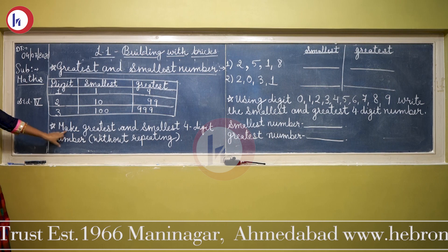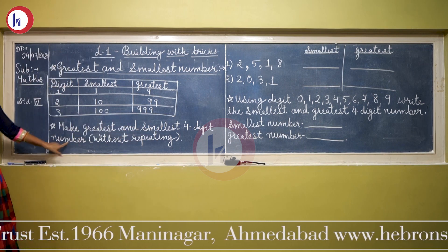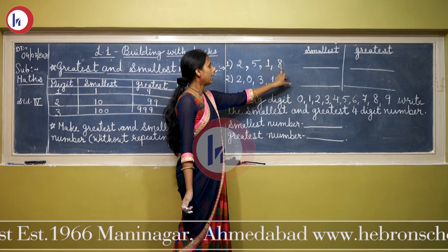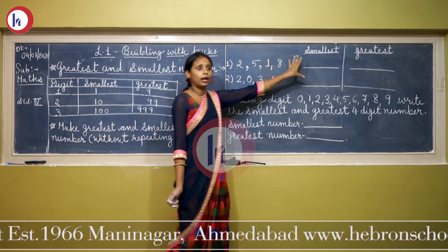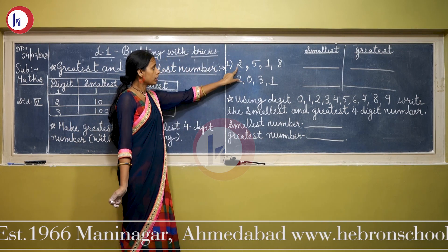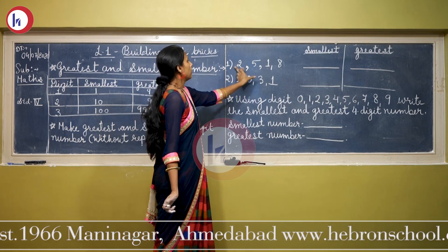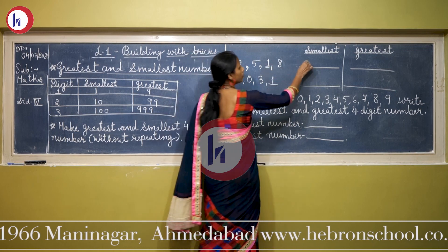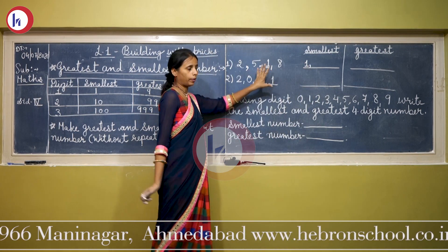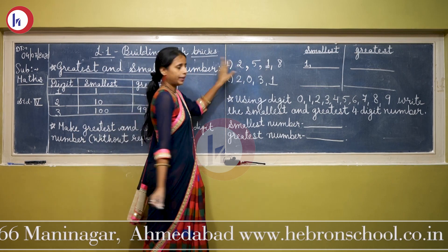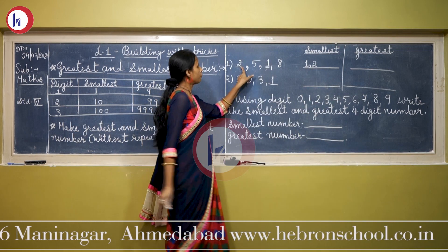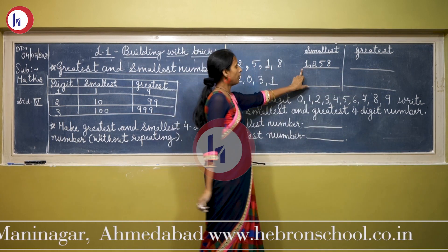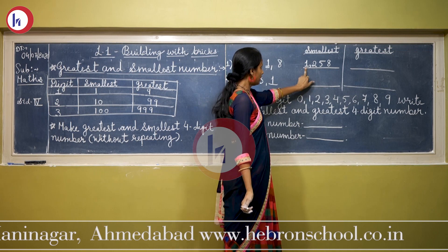Now make the greatest and smallest 4-digit number without repeating, using the digits 2, 5, 1, and 8. To make the smallest number, arrange them in ascending order. The smallest is 1, then 2, then 5, then 8. So the smallest number is 1258.